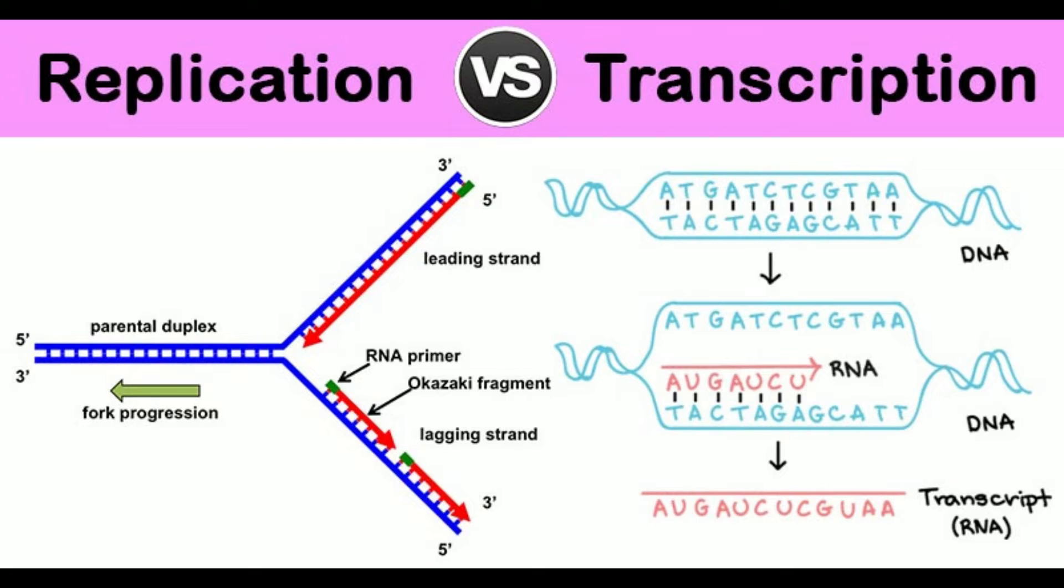Character: DNA replication versus transcription. 1. Definition: DNA replication is the process of making new copies of DNA. Transcription is the process by which DNA is transcribed to RNA.